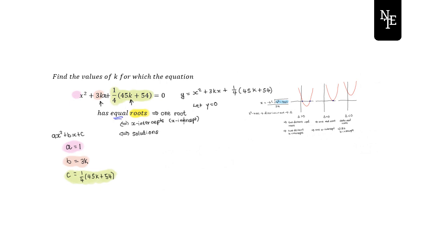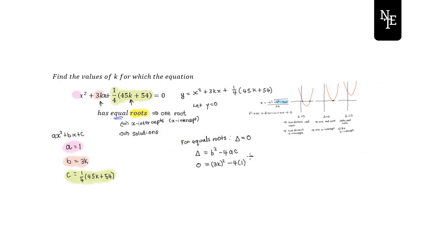We want the expression to have only one root — one x-intercept. So for equal roots, the discriminant equals zero. Substituting into b² − 4ac = 0: b = 3k, a = 1, and c = ¼(45k + 54).